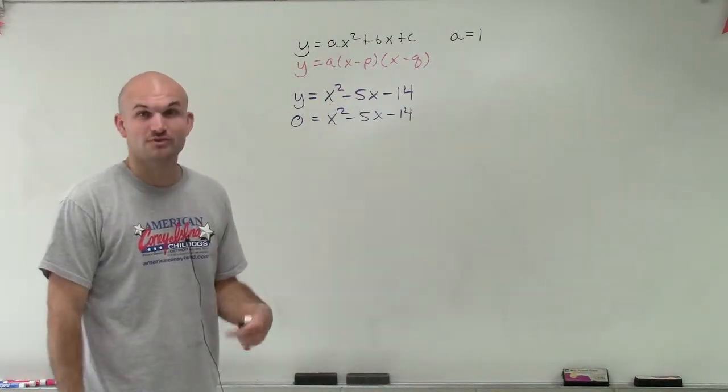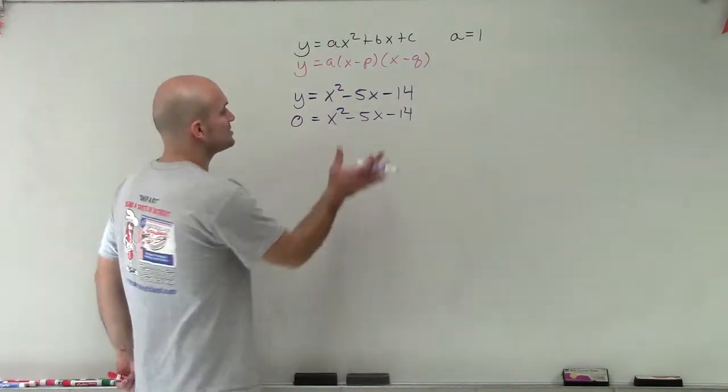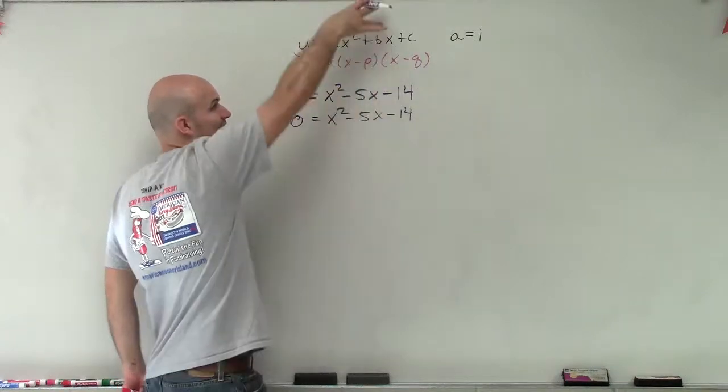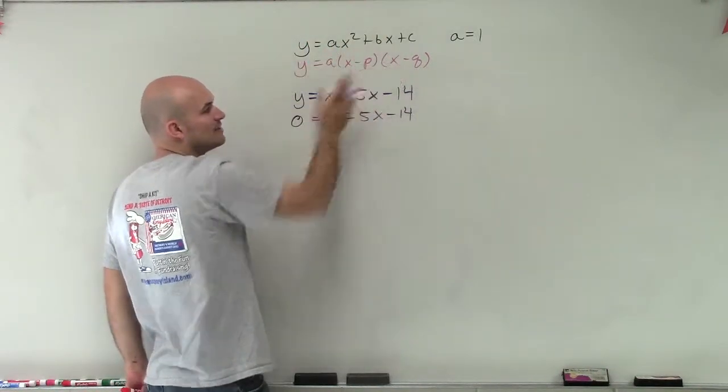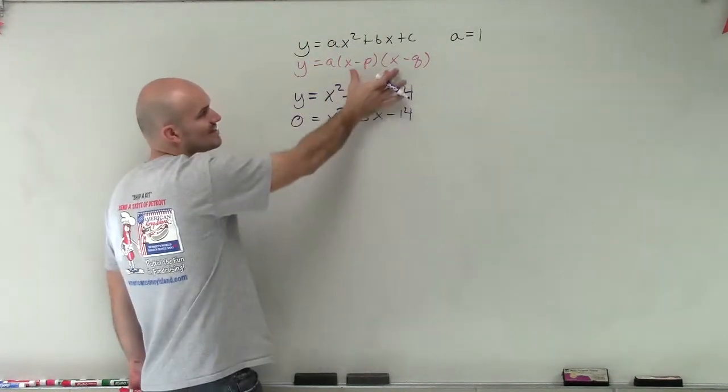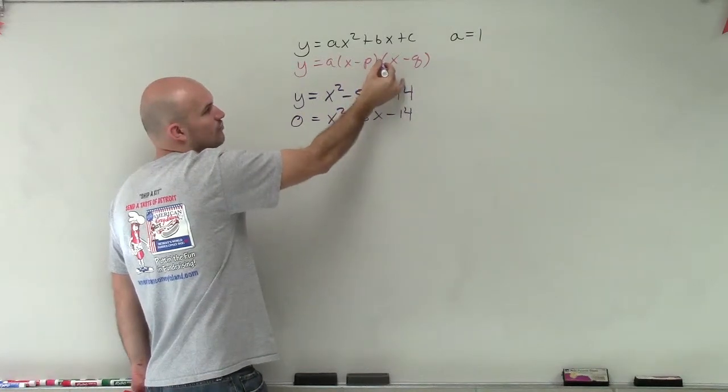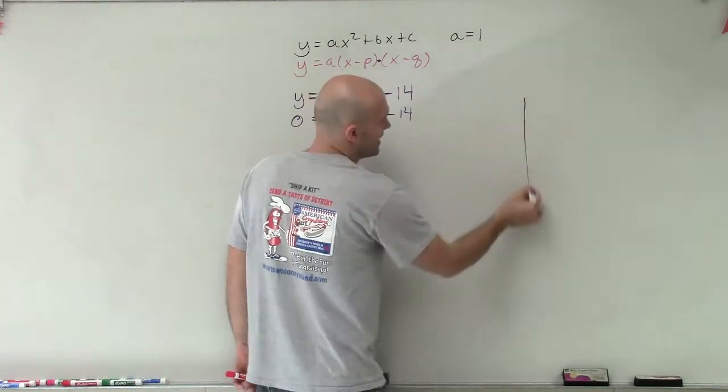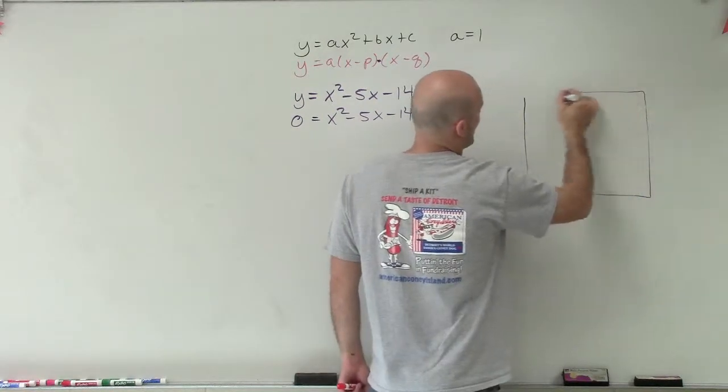So we're going to have to come up with another method, which we call the zero product property. So to apply the zero product property, we have to take our equation in standard form and rewrite it into intercept form. Notice intercept form, we have a product of what we call our two factors. So to do that, I'm going to create a nice little box.